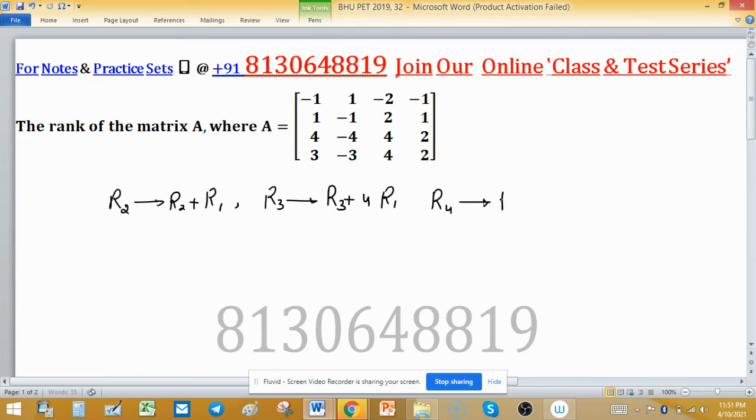These are all operations we are applying simultaneously to row reduce this matrix. So first row is the same: minus 1, 1, minus 2, minus 1.